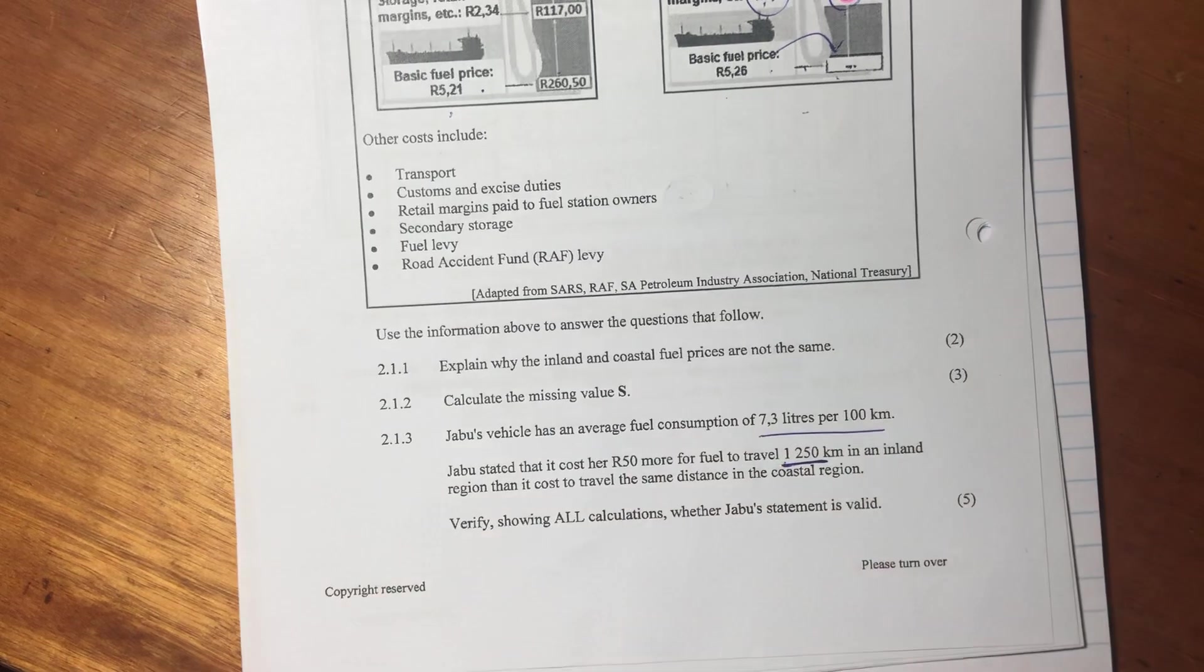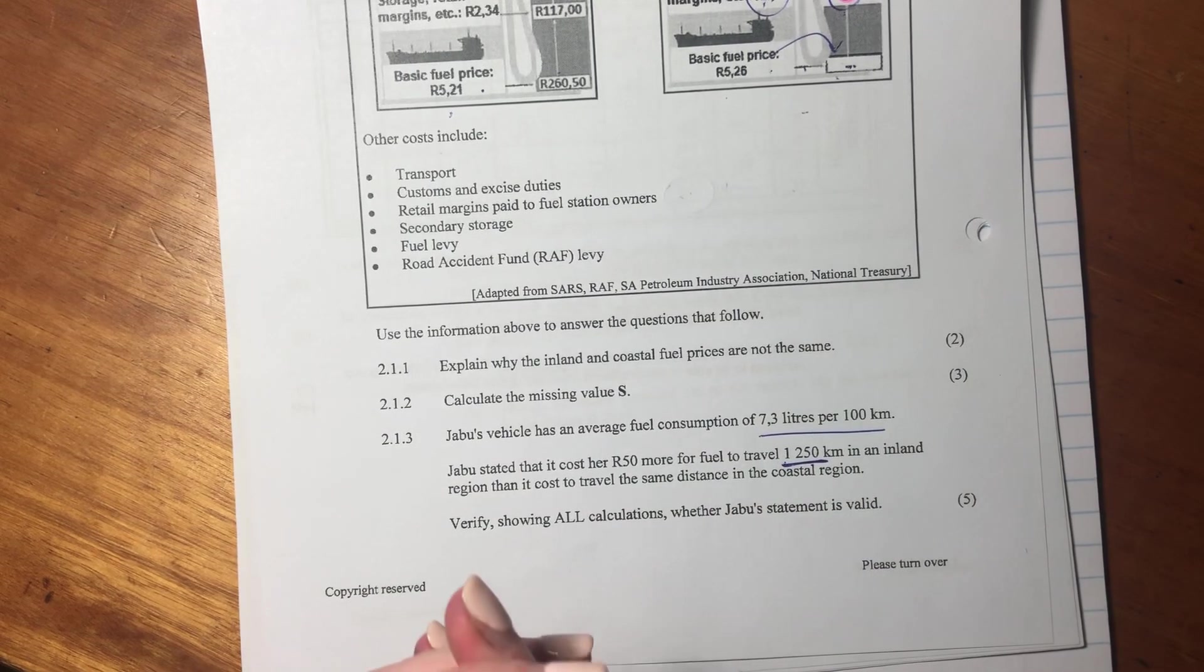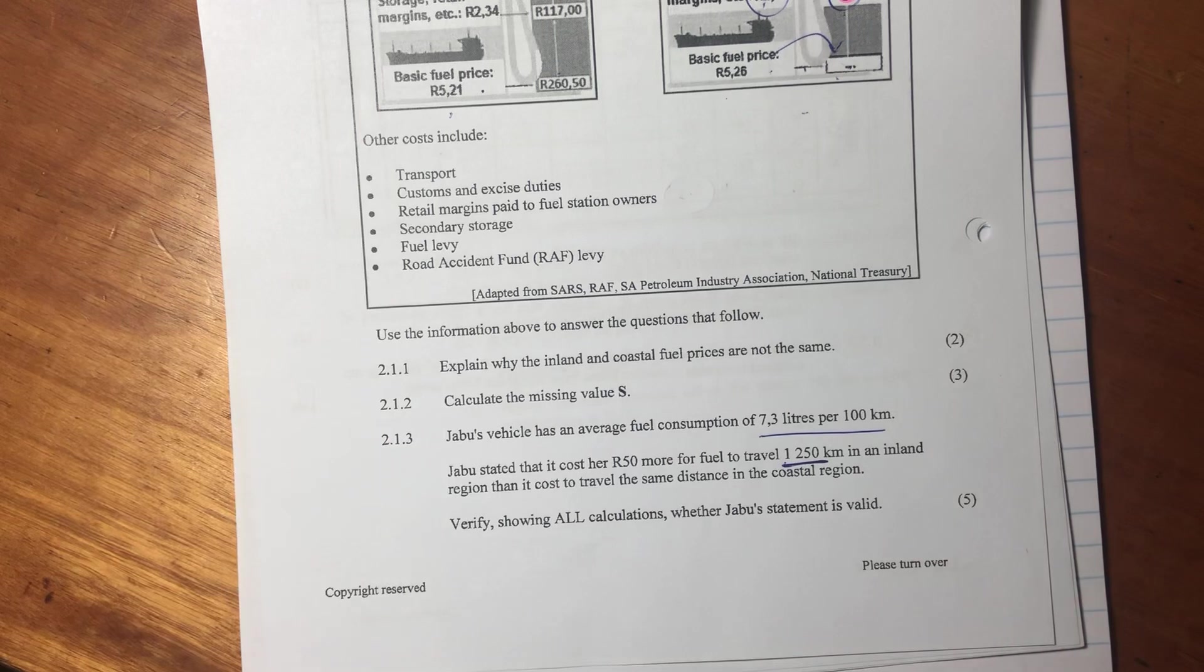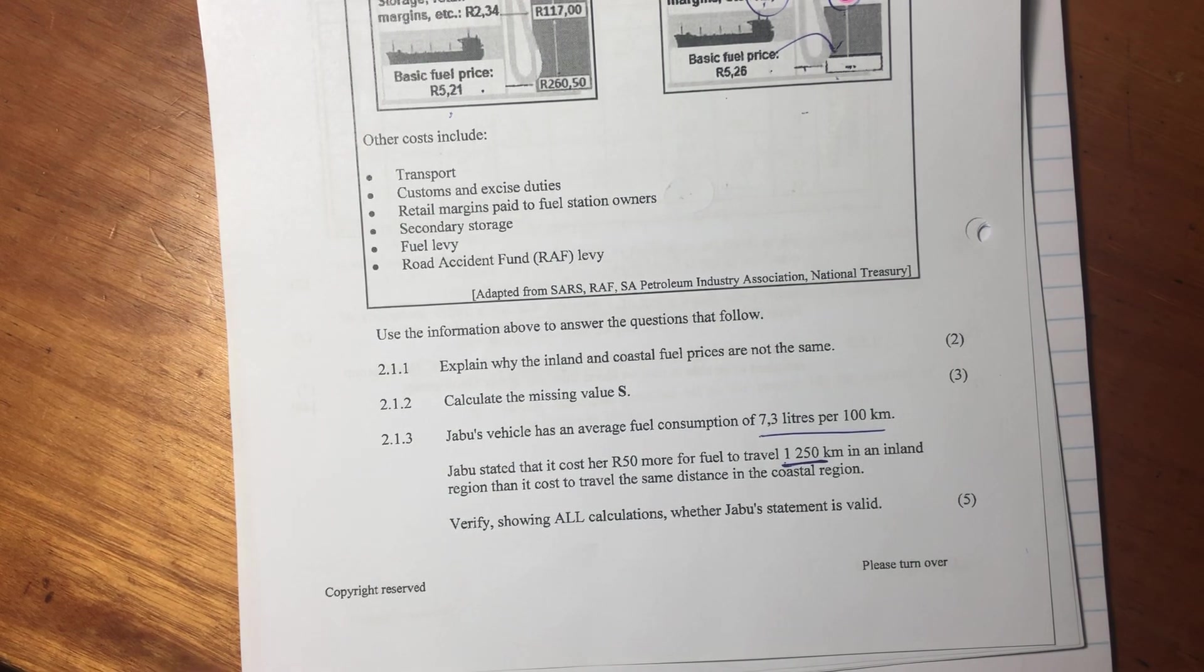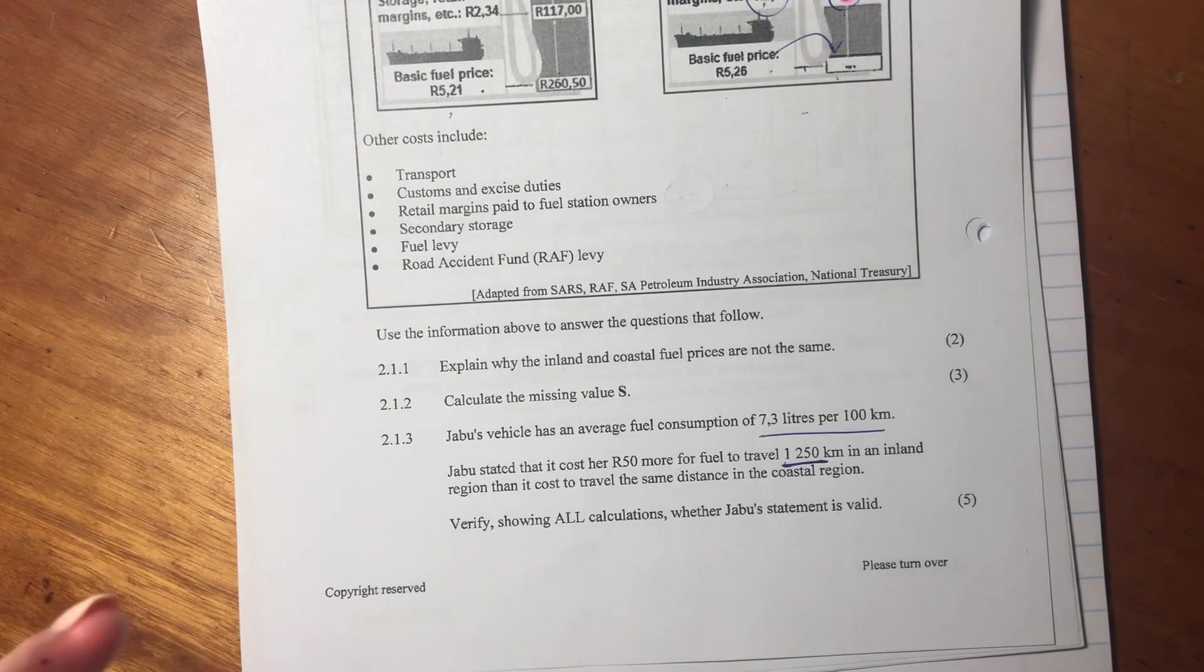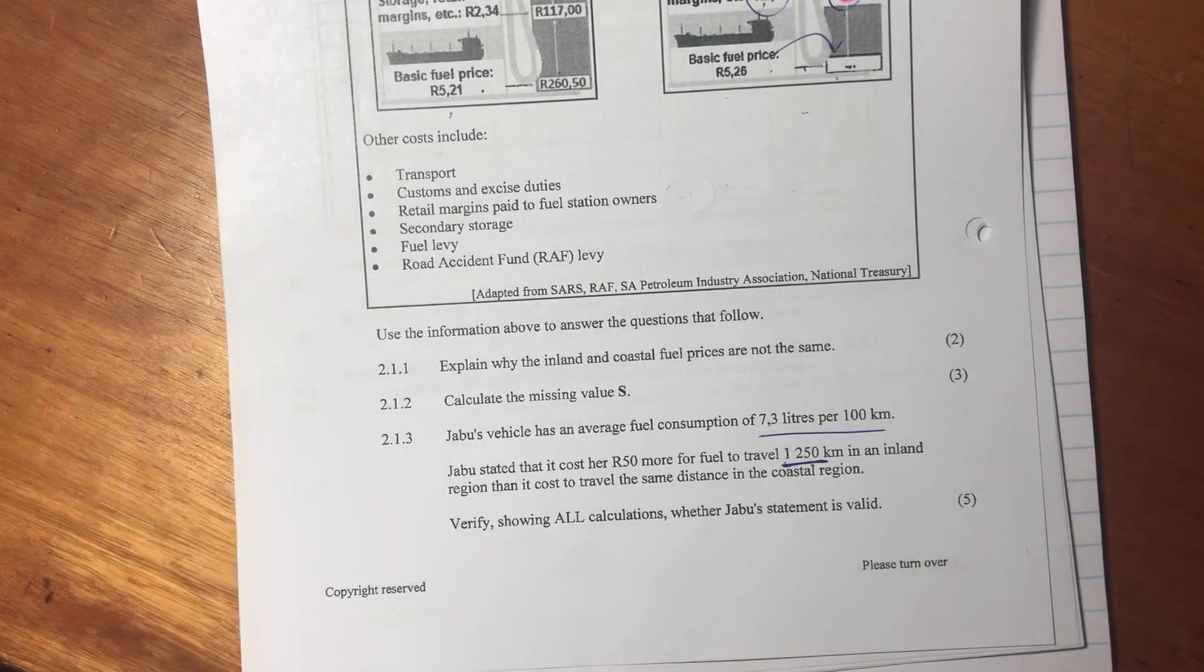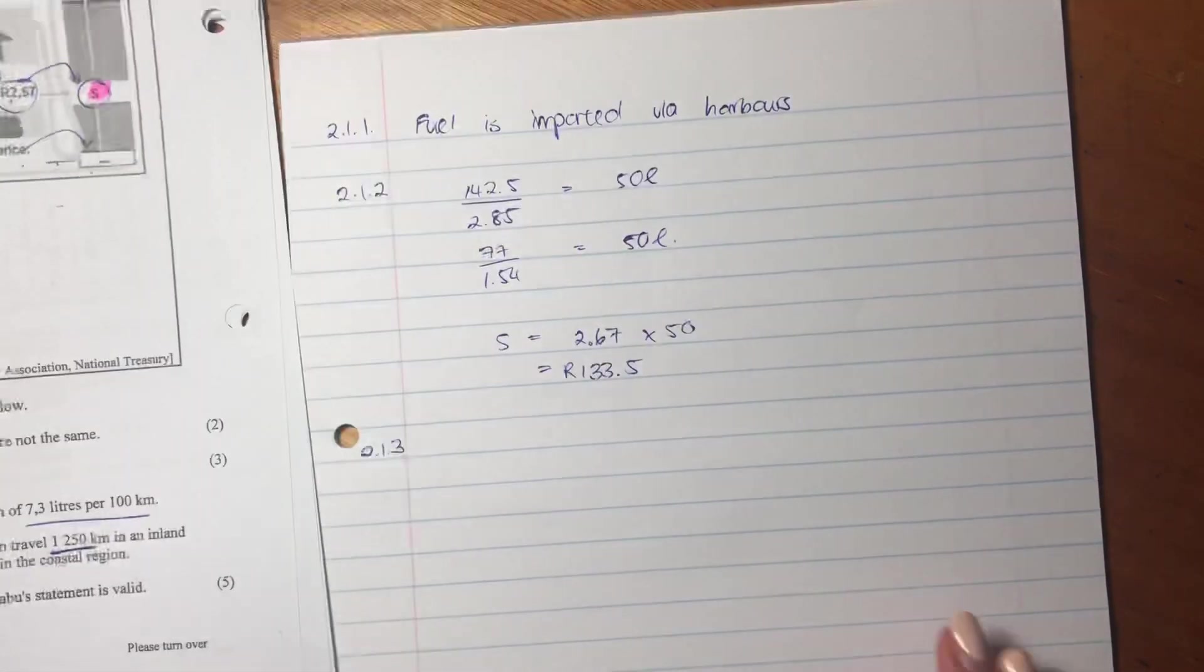So what we're going to do is let's first start over here. The reason we're going to do that is because we need to figure out how many liters she uses to travel 1,250 kilometers. Because the number of liters that she uses in a coastal or inland region doesn't change. The only thing that's different between those two regions is the cost. But let's find out how many liters she needs in each of those places in order to find the cost.